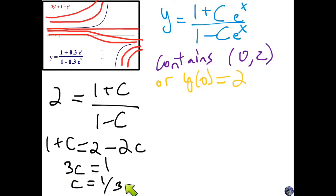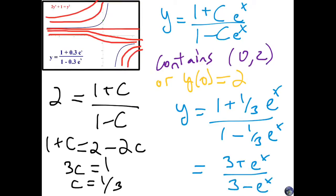So that's it. If the question says find the solution that passes through this point and also solves this original differential equation, this is it. Now you could theoretically leave the answer like this, but to my mind it looks a little goofy to have fractions inside of fractions. So I'm going to multiply everything by 3. So y = (3 + e^x)/(3 - e^x).